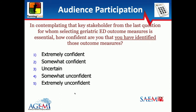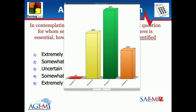Contemplating the key stakeholder from the last question: for whichever stakeholder you're selecting outcome measures for, how confident are you that you have identified those outcome measures? Most of us are somewhere around uncertainty, which I think is actually accurate — and that's why we're all here.